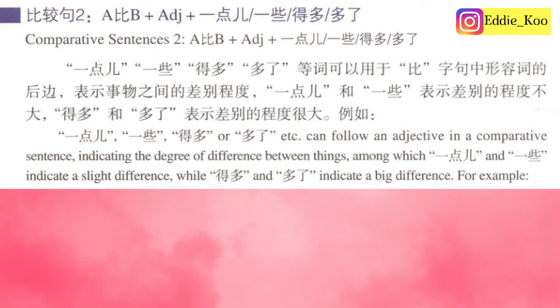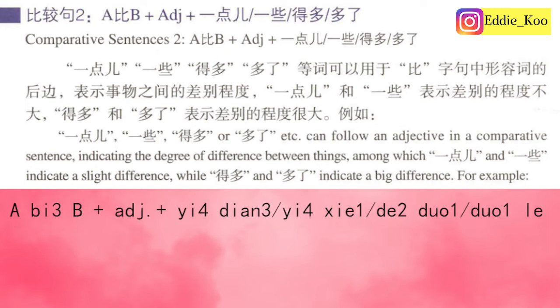Today's grammar point is a comparative sentence structure, which is A比B plus adjective, plus 一点, or 一些, or 得多, or 多了. By the way, it's not necessary to say 一点儿 — you can omit the R sound and just say 一点. 一点 means a little.